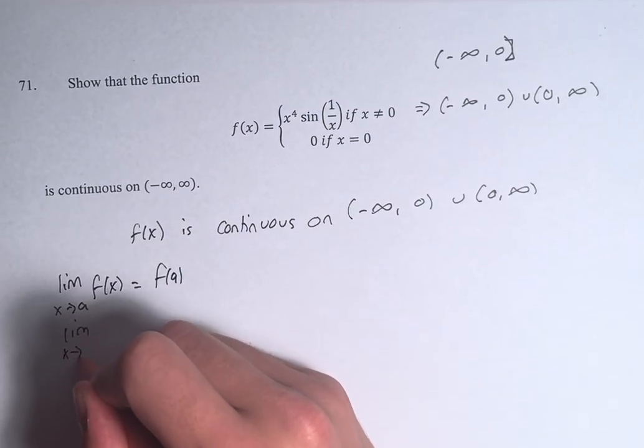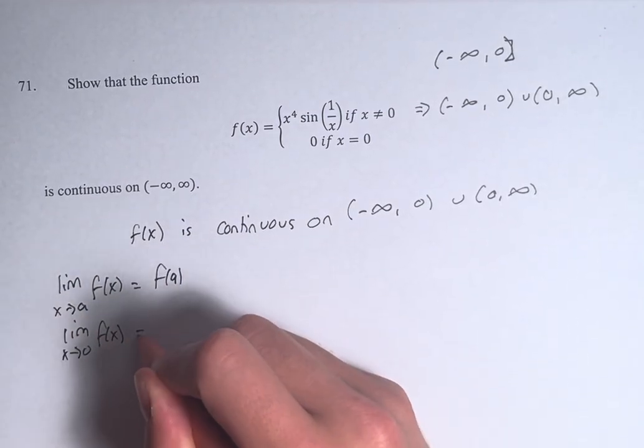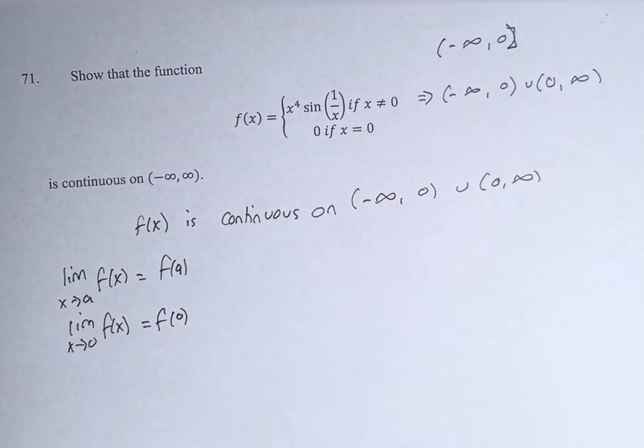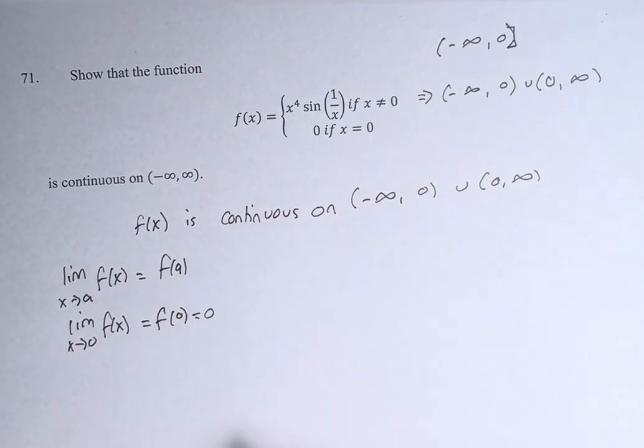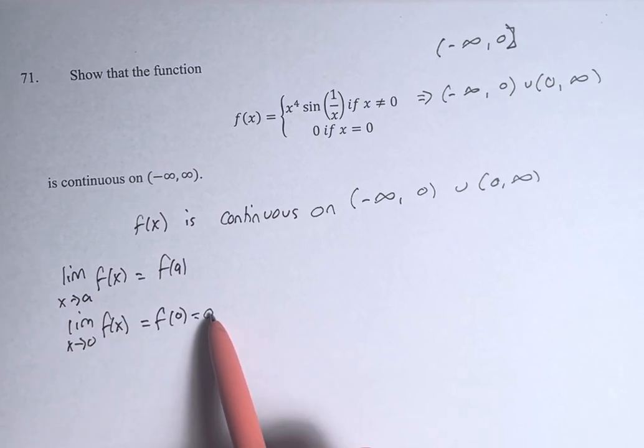So in this case, the limit as x approaches 0 of f(x) is equal to f(0). So f(0) equals 0. So we need to show that the limit as x approaches 0 of f(x) is equal to 0.